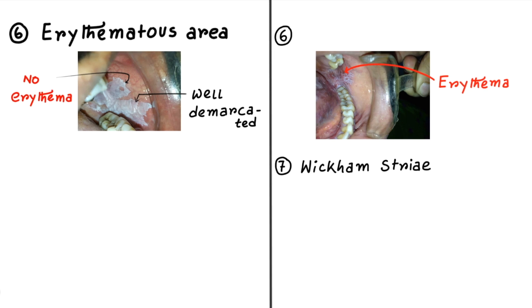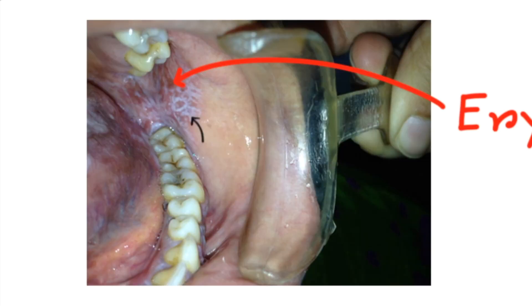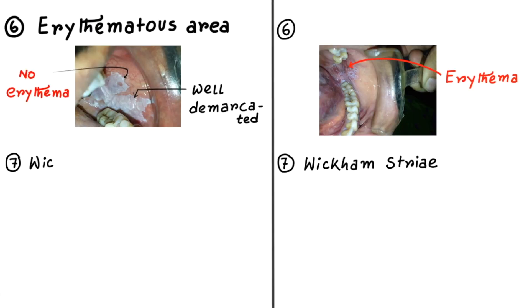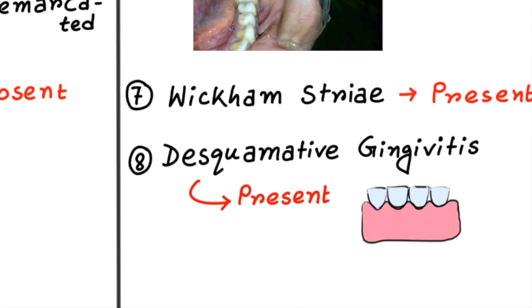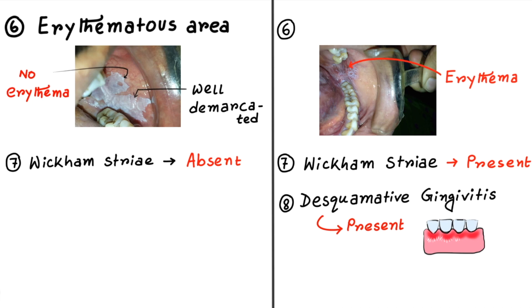The next differentiating point is Wickham's striae. Mostly it is seen on skin lesions, but you can also find it in the oral cavity. Here you can see fine white lace-like striae — this is a typical feature of Lichen Planus, but it is absent in Leukoplakia. If the gingiva is involved, sometimes you can find desquamative gingivitis. Remember, desquamative gingivitis is a generalized feature and can be seen in other diseases also, so try to find Wickham's striae. If Wickham's striae is present with desquamative gingivitis, you can go for Lichen Planus. Wickham's striae is absent in Leukoplakia.